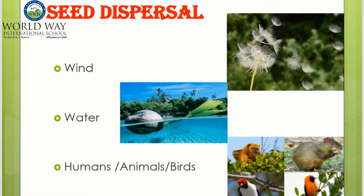Seed dispersal: when a fruit is broken open or dries up, its seeds may fall into the soil near the plant. Some seeds have wings and are carried by the wind to places far away from the plant, while some seeds are carried away by water. Others are collected and planted in the soil by people. This is called seed dispersal.